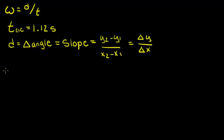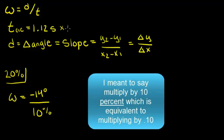So, we just found for 20%, we found that the angular velocity equals negative 14 degrees over 10%. We can't just do this math how it's written. We need to change 10% to time. So, we know that we have to find what's 10% of this 1.12 seconds. To do so, we'll simply multiply it by 10.